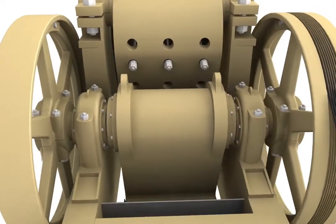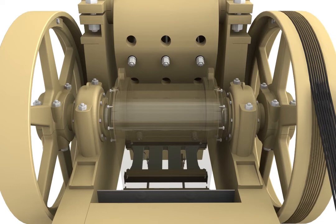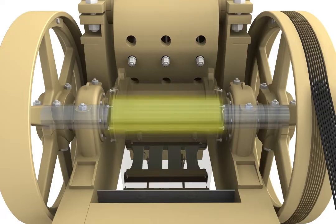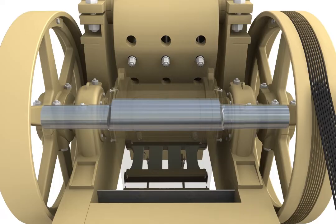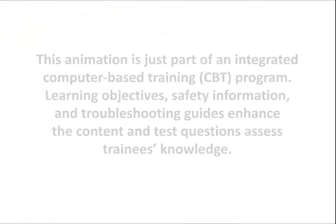Pitman assembly: A second shaft, the Pitman shaft, is located behind the swing jaw. The central section of the Pitman shaft has a larger diameter than the outside sections and its centre line is offset from the rest of the shaft to form an eccentric.